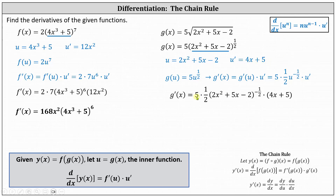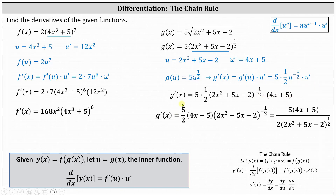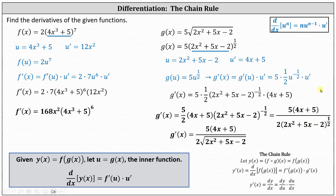Performing substitution, we have g prime of x equals 5 times 1/2 times the quantity 2x squared plus 5x minus 2 to the power of negative 1/2, times 4x plus 5. We can write this as g prime of x equals 5/2 times the quantity 4x plus 5 times the quantity 2x squared plus 5x minus 2 to the negative 1/2 power. We can also make the exponent positive by moving the quantity to the denominator, and replace the rational exponent of 1/2 with a square root.